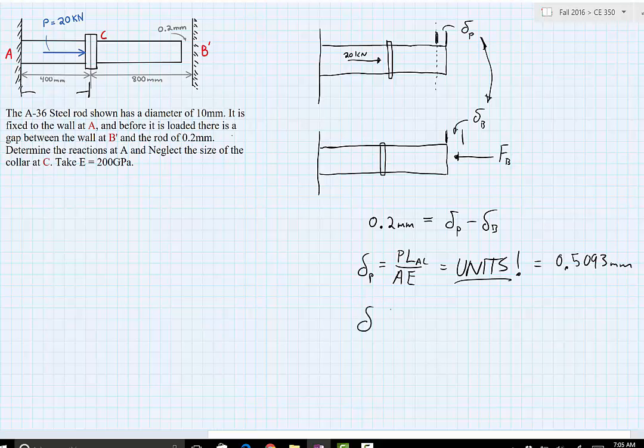Doing the same thing for our delta B, we get our force B, which was the force acting to push the rod back to the wall. Our length is going to be the entire member, from A to B, which is the summation of the two lengths, 400 and 800 millimeters, divided by the same area and same modulus of elasticity. Again, very conscious of our units.